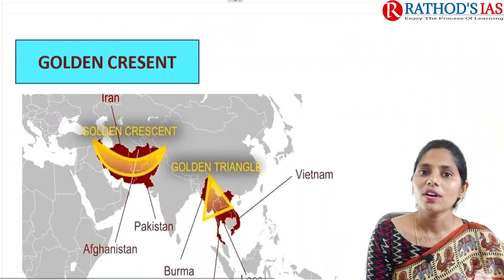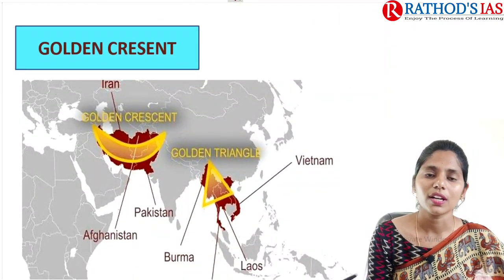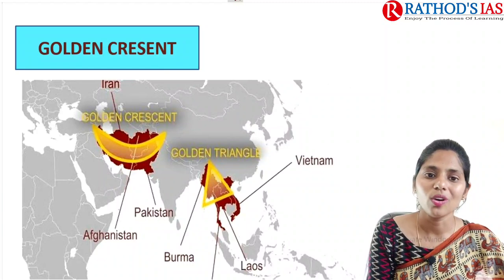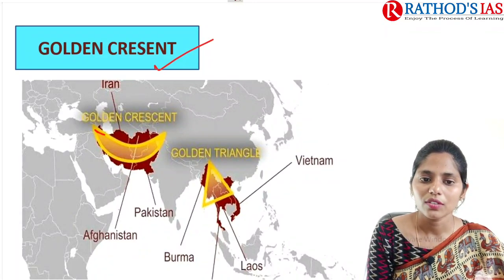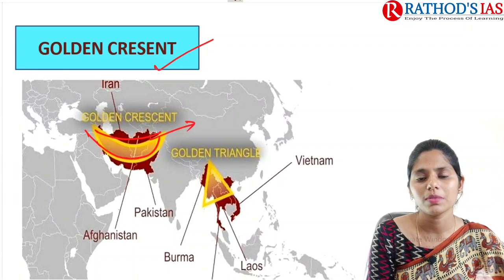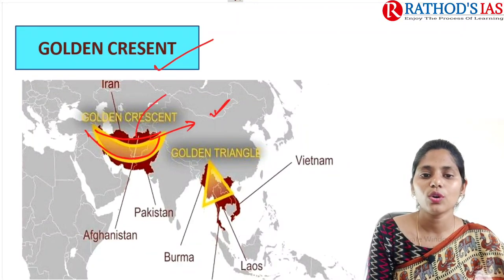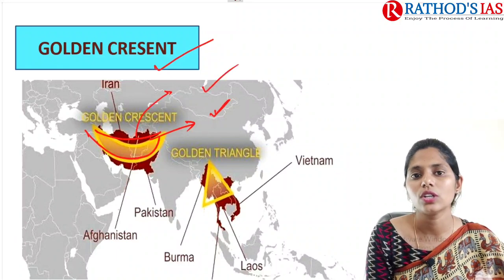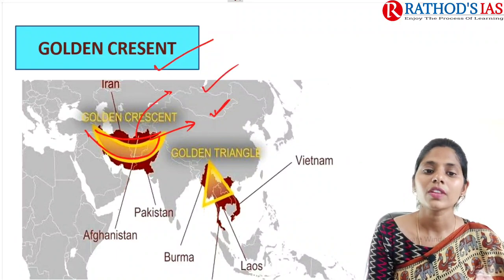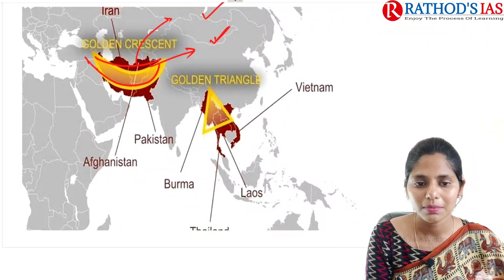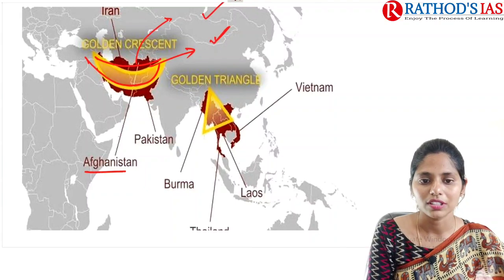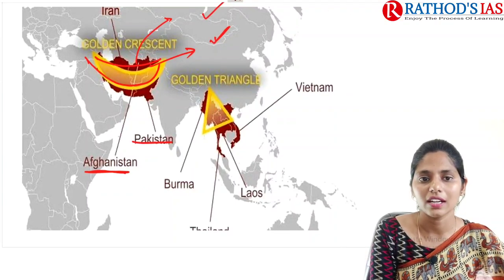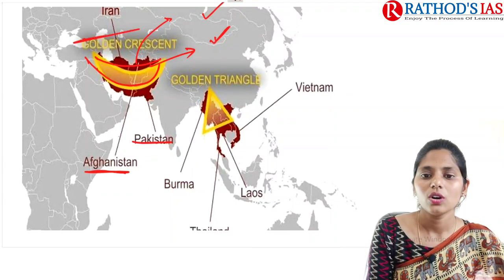The last important thing is the Golden Crescent, an area very much famous for growing opium. It is one of the important concerns for India regarding drug trafficking. The Golden Crescent mainly covers Afghanistan, Pakistan, and Iran regions.